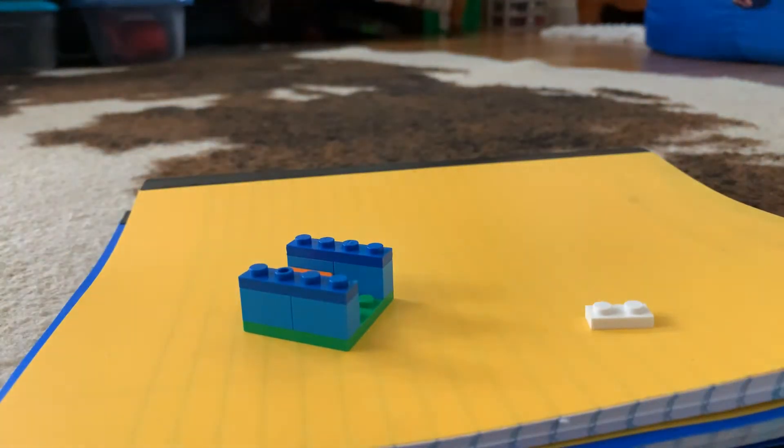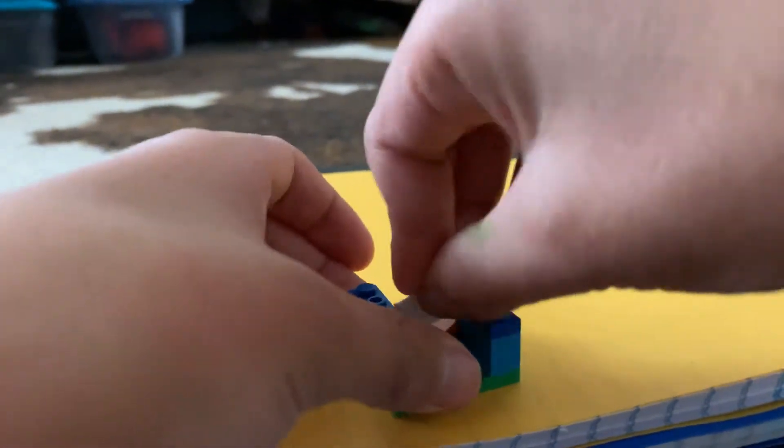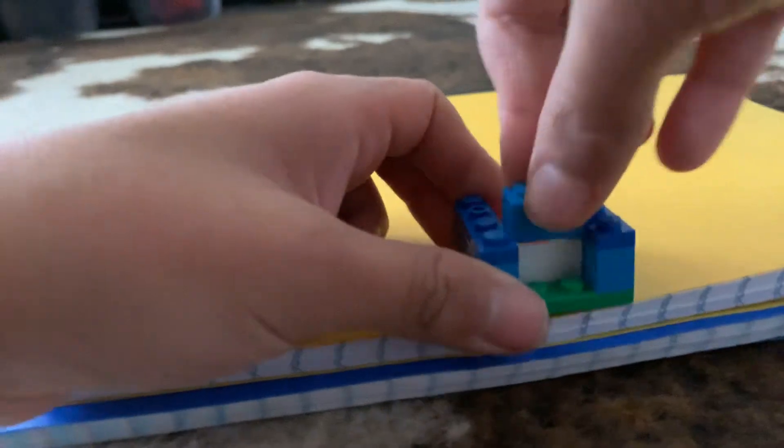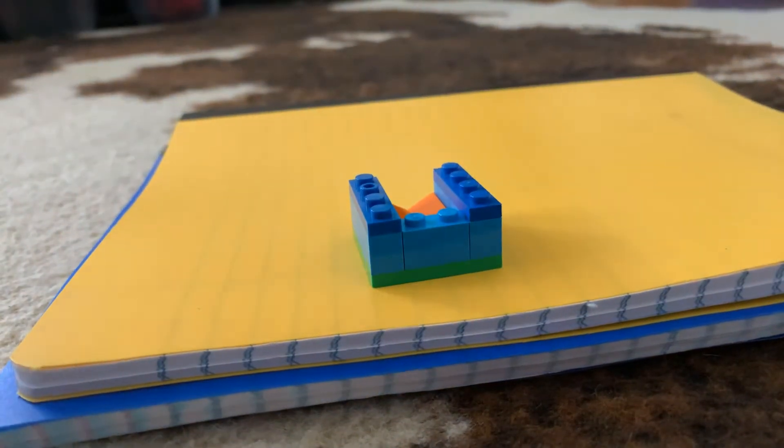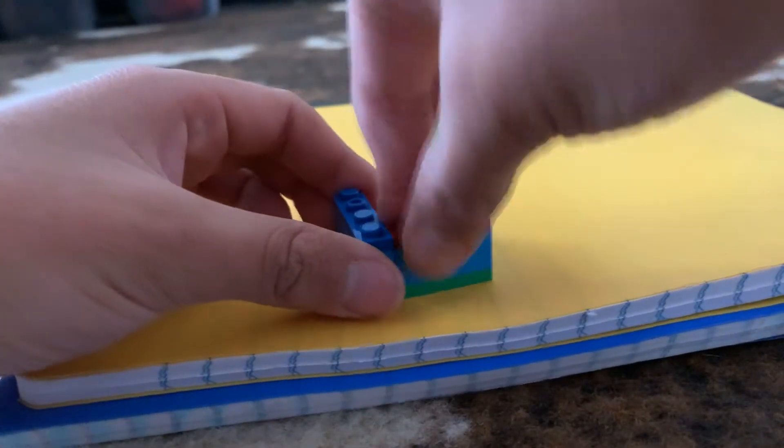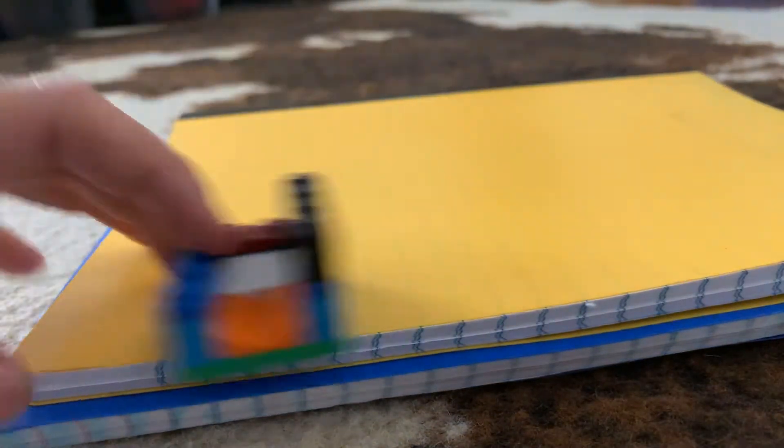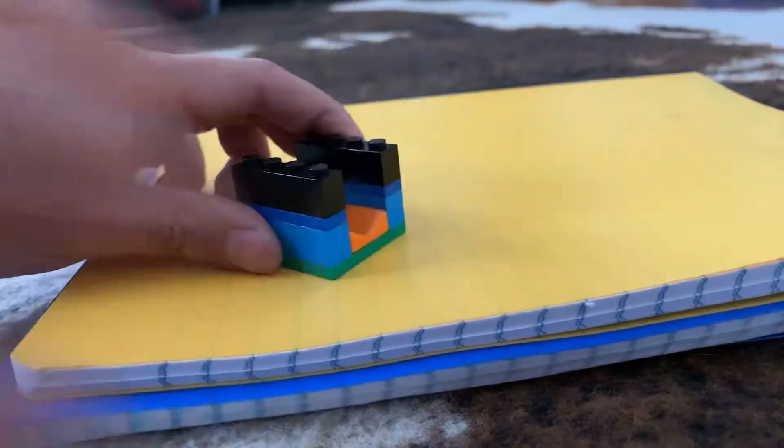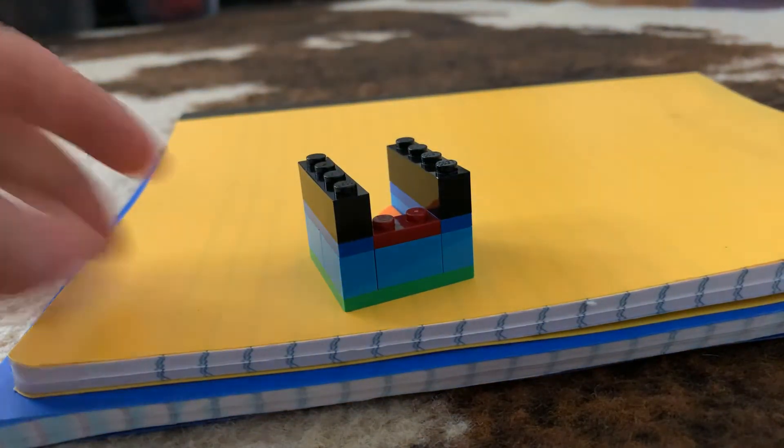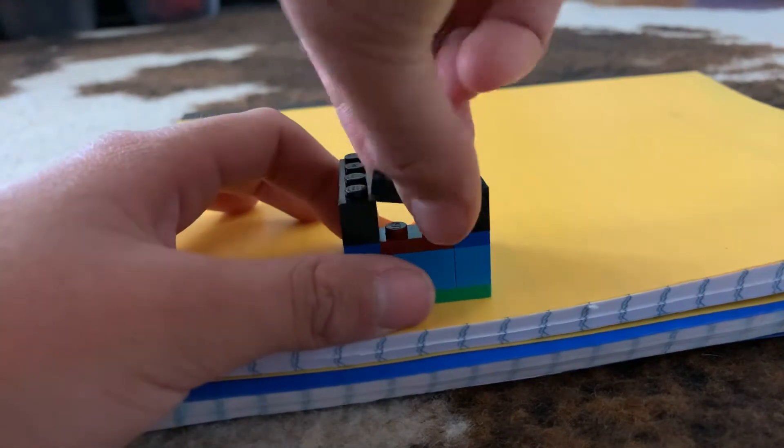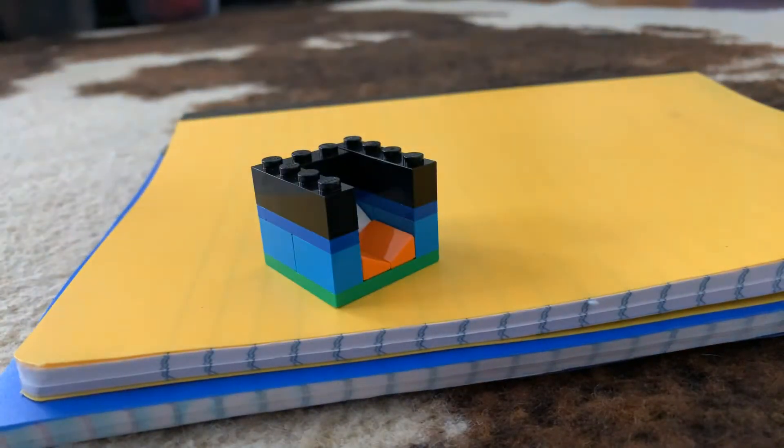Actually, you're going to take that back. Sorry about that. Take another 1x2 and place it on right here. Take a 1x4, place it on right here. So now you have this. Take a 1x2, and now you have this.